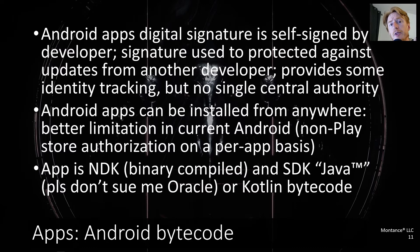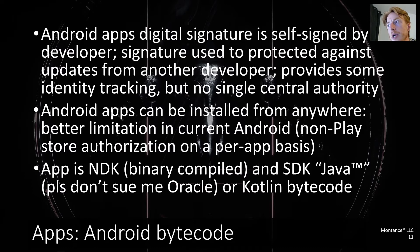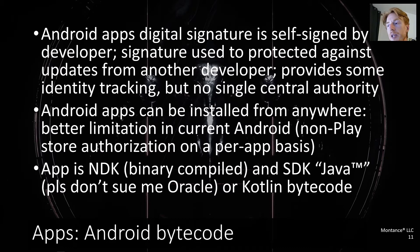Android apps include potential compiled components via the NDK, shipped in ELF format, but most code is Dalvik bytecode written in Java. There was a major lawsuit between Oracle and Google about this. As a result Google changed to Kotlin, though both compile to Dalvik bytecode included in a file called classes.dex inside the APK file, which is just a zip file.